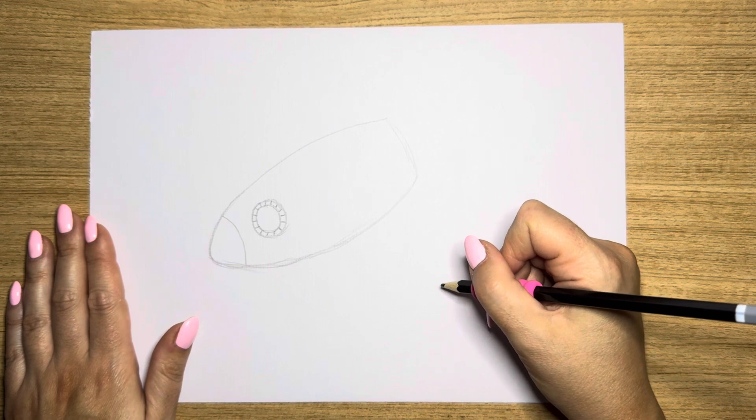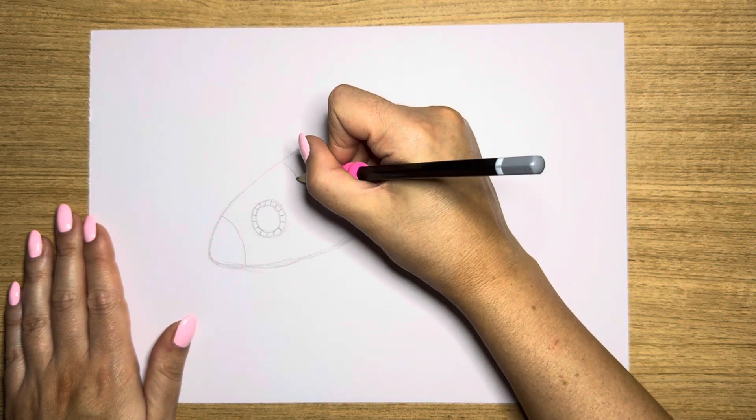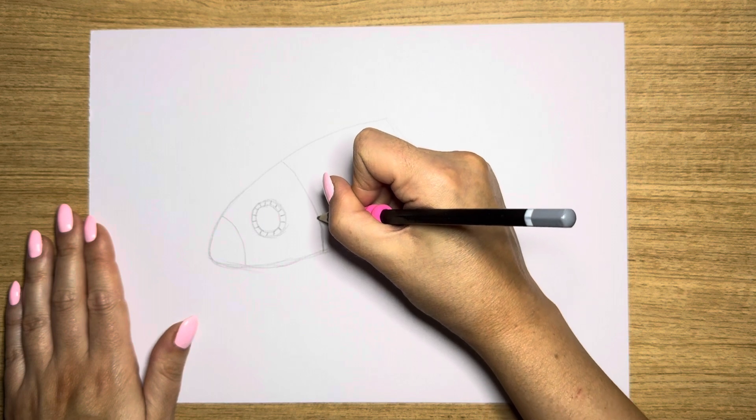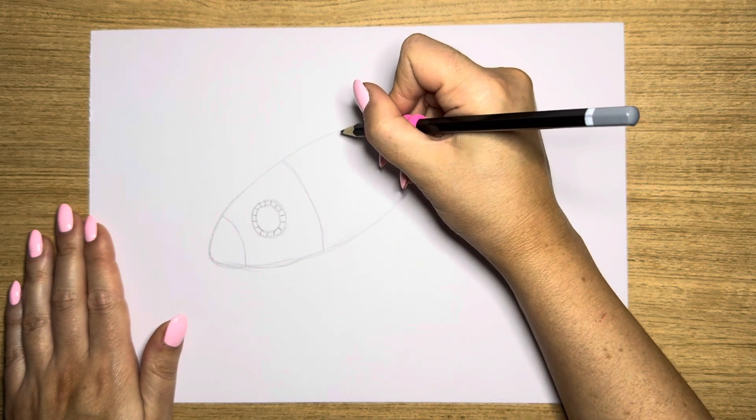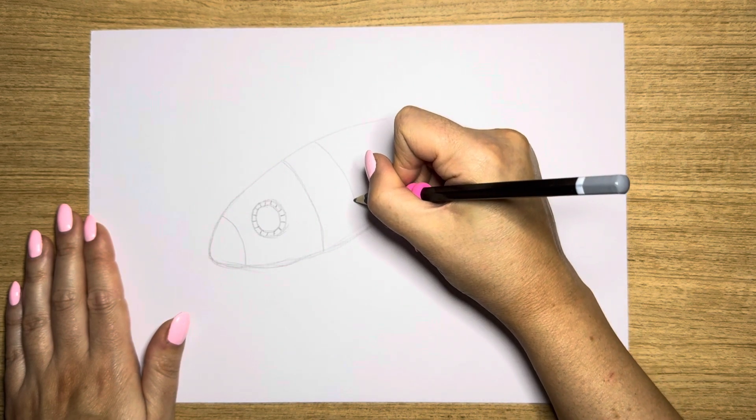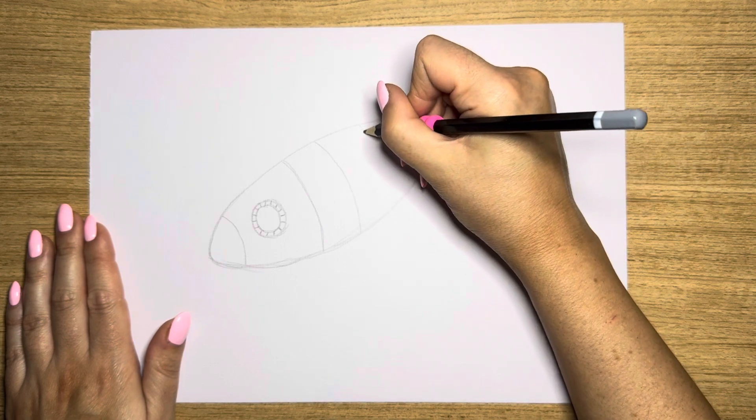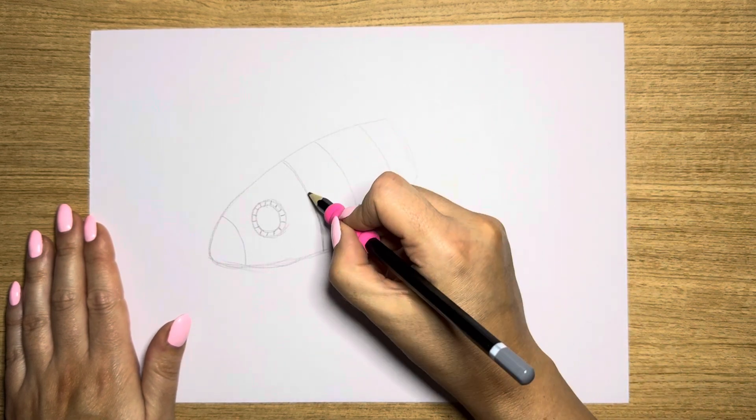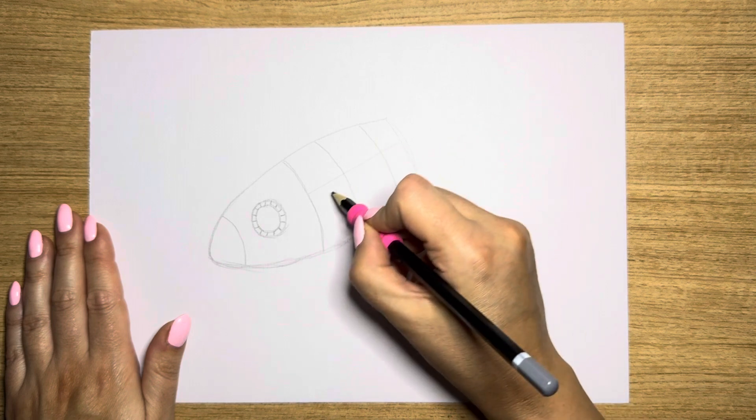Next, what I'm going to do is some lines here. I'm going to do three lines, one here, two, and another one here, three. And then I'm going to do two straight lines running through the middle here.